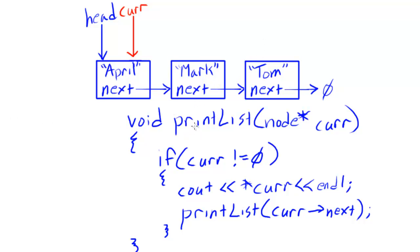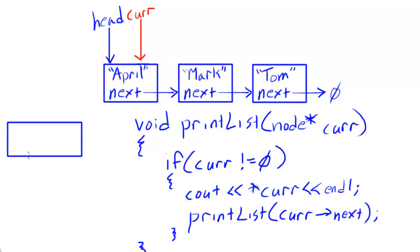Let me quickly illustrate what happens on the call stack as we execute this recursive print list function. The first call to print list allocates a stack frame — ignoring our main stack frame — and the address of head is passed in, so cur holds the same address as head. The first operation in our recursive case is to print out whatever cur is pointing to, so we do a dereference on cur and print out April.